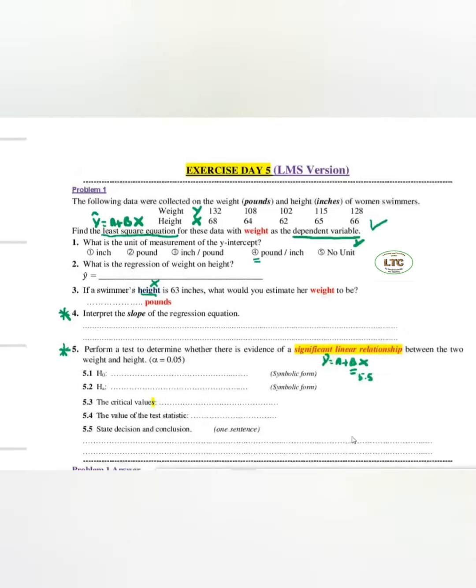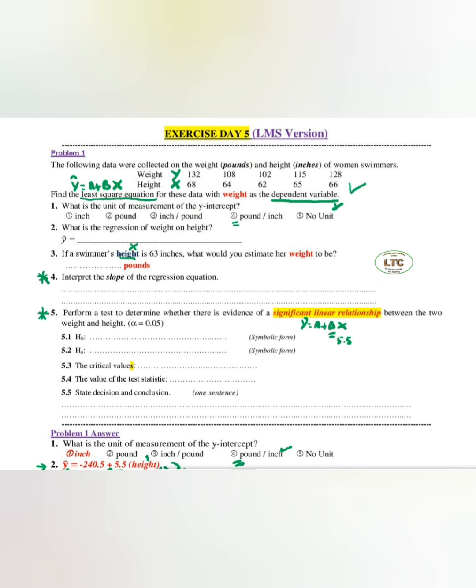If we consider the whole population of women swimmers, if we know all data, then you will get the equation for the whole population. At this time we don't know what a is - call it alpha. We don't know what b is - call it beta. So this is the unknown equation which is the best for the population of all women swimmers.